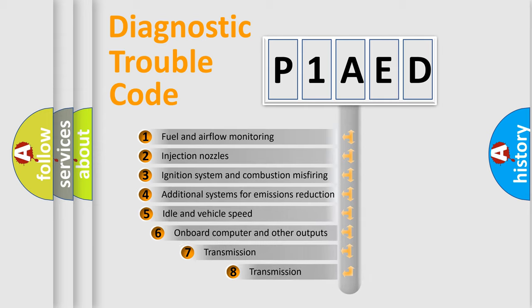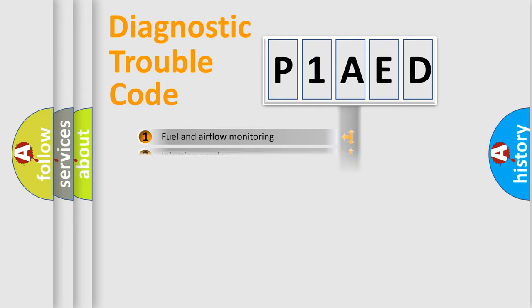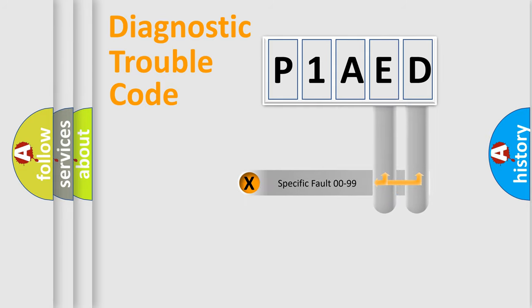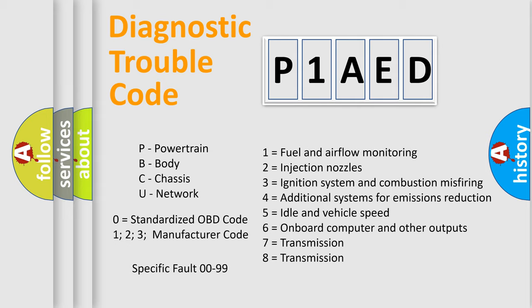The third character specifies a subset of errors. The distribution shown is valid only for the standardized DTC code. Only the last two characters define the specific fault of the group. Let's not forget that such a division is valid only if the other character code is expressed by the number zero.